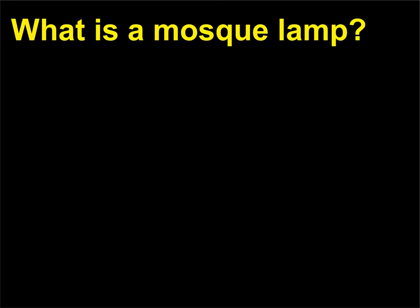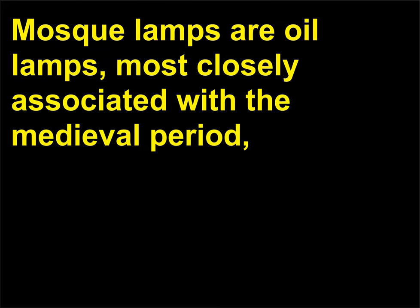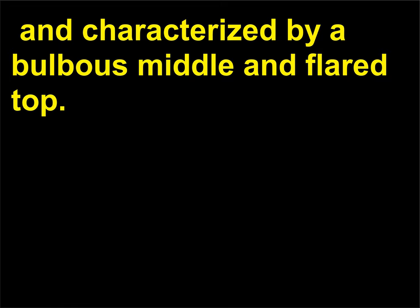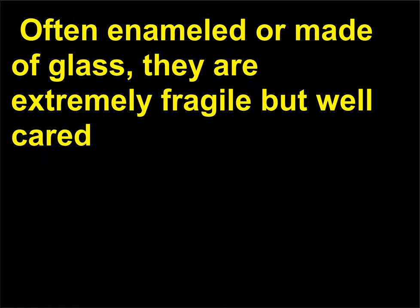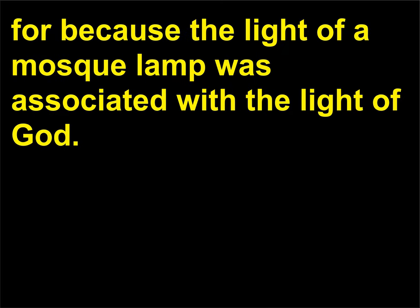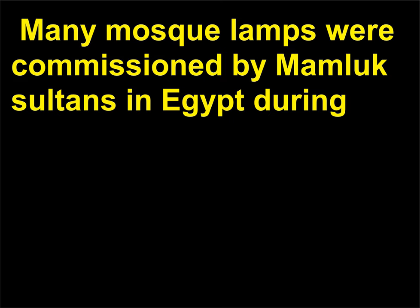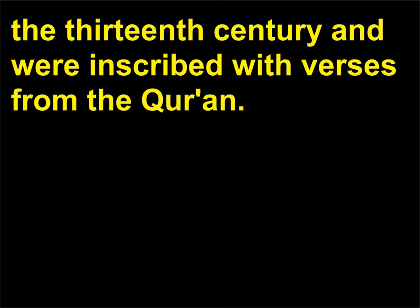What is a mosque lamp? Mosque lamps are oil lamps most closely associated with the medieval period and characterized by a bulbous middle and flared top. Often enameled or made of glass, they are extremely fragile but well cared for because the light of a mosque lamp was associated with the light of God. Many mosque lamps were commissioned by Mamluk sultans in Egypt during the 13th century and were inscribed with verses from the Quran.